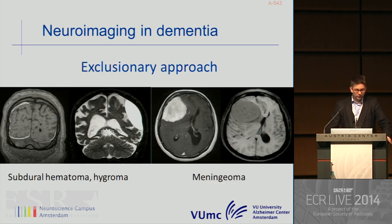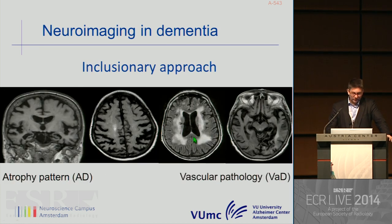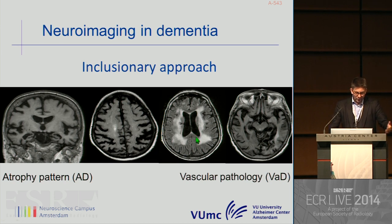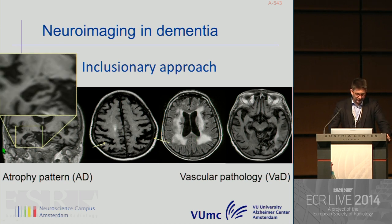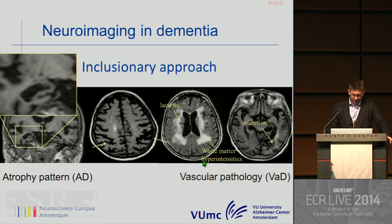This is an example of the exclusionary approach: ruling out possible treatable causes of dementia, like subdural hematomas or extra-axial tumors, as seen here in the right frontal lobe. But more often we are dealing with the inclusionary approach, by observing a certain atrophy pattern—like here in the medial temporal lobe on the right side—global cortical atrophy, atrophy of the posterior part of the brain in AD patients, and vascular pathology like lacunes and large vessel disease in vascular dementia patients.